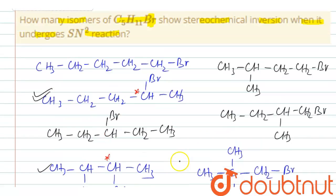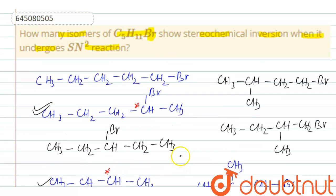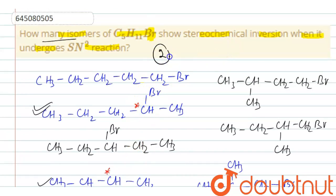Therefore, as per the question — how many isomers will show stereochemical inversion — the answer is these two. There are two isomers of C5H11Br that show stereochemical inversion. Thank you.